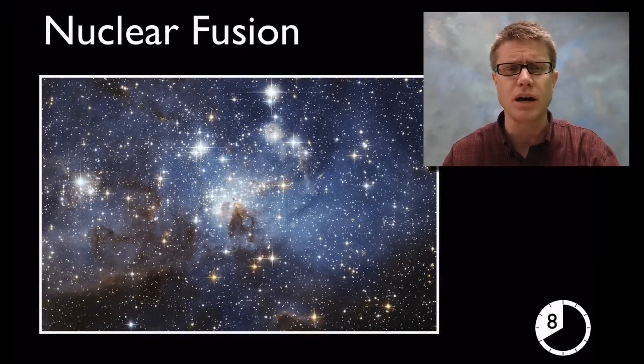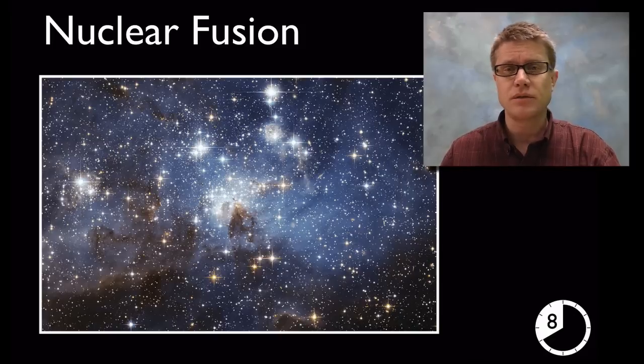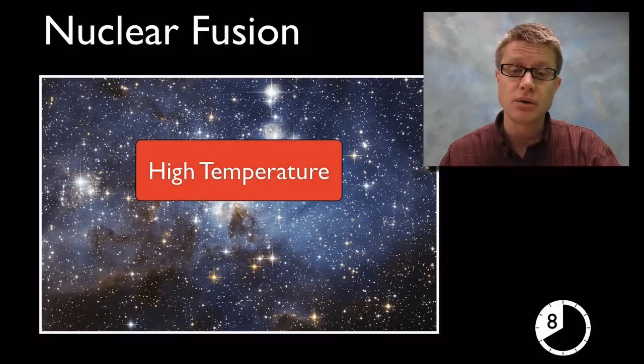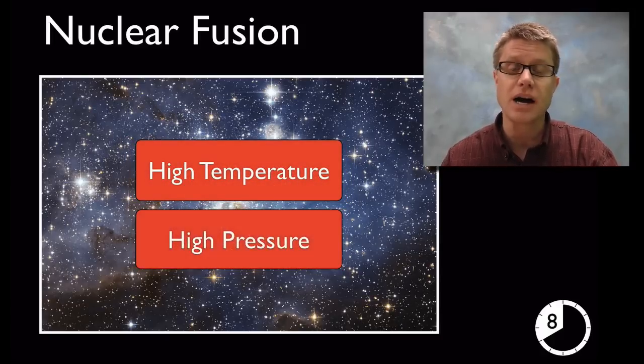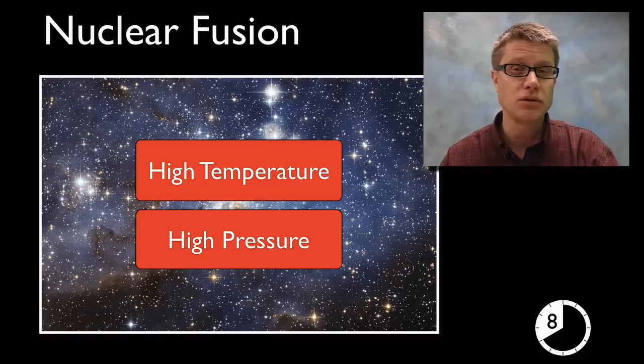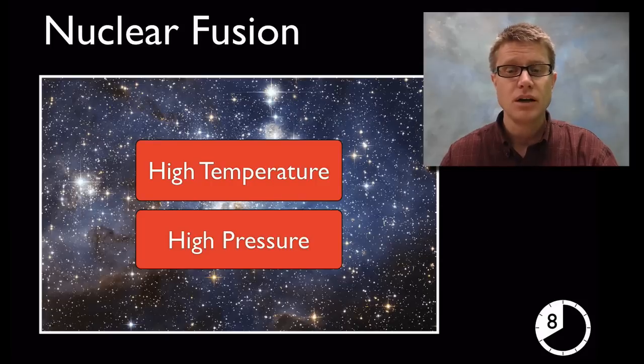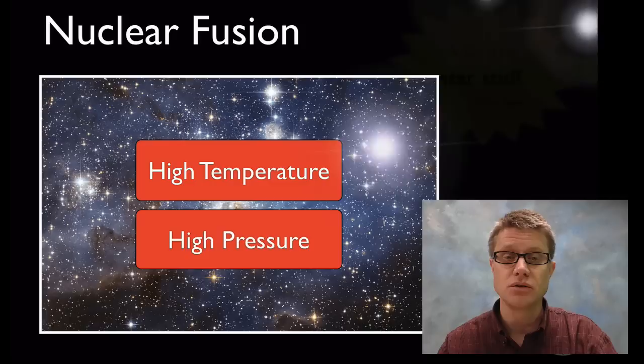But if you're a middle school teacher what should you talk about? Well, you should start by talking about fusion. Fusion is important because that produces the energy in stars. What do we need to get fusion going? We need high temperature and we also need high pressure. We don't have fusion going on on our planet because we don't have enough mass to create enough pressure to create enough temperature. But all the energy coming from stars is coming from nuclear fusion.